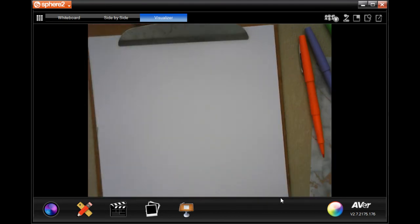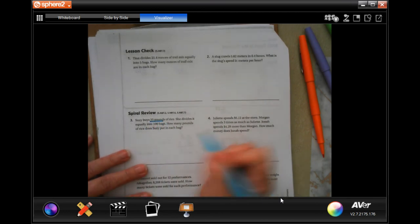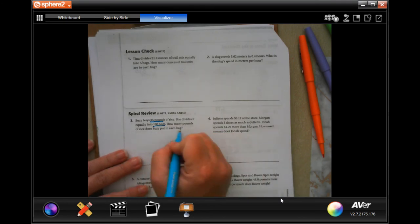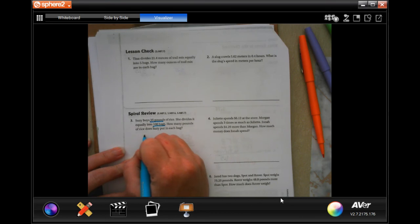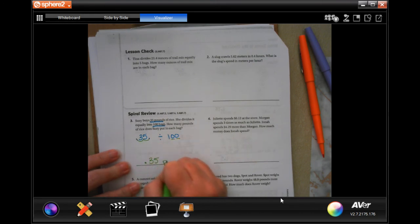We're going to get started on the back of my lesson check. You guys are going to do that yourself, just like always. Spiral review. Susie buys 35 pounds of rice. She divides it equally into 100 bags. How many pounds of rice does Susie put in each bag? Remember that when you have 35, let's say that the decimal goes afterwards. And we're going to divide that into 100 bags. There's one, two zeros. You're going to move the decimal one, two places. So 0.35, and that's being measured in pounds.